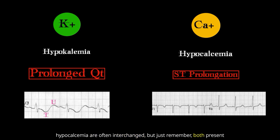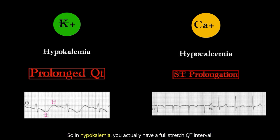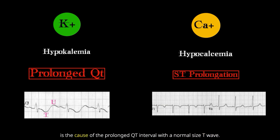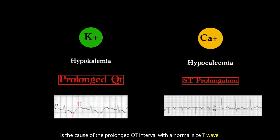Just remember, both hypocalcemia and hypokalemia present with a long QT, but the different portions of the QT interval are long. In hypokalemia, you actually have a fully stretched QT interval — the T wave itself gets stretched out, and you have a U wave. Counter that to hypocalcemia, where you have ST prolongation as the cause of the prolonged QT interval with a normal-sized T wave.